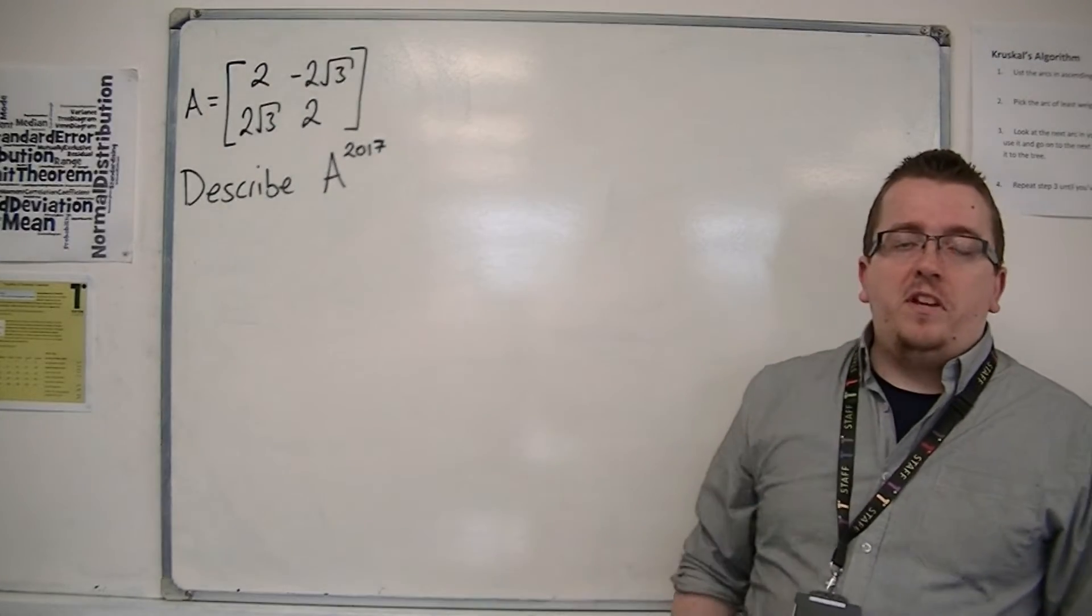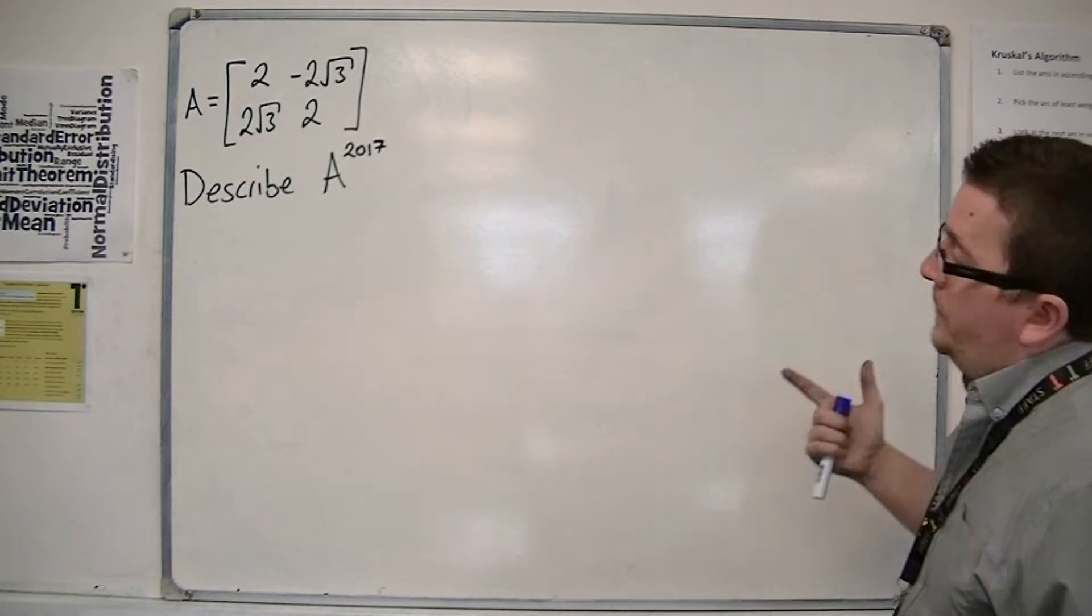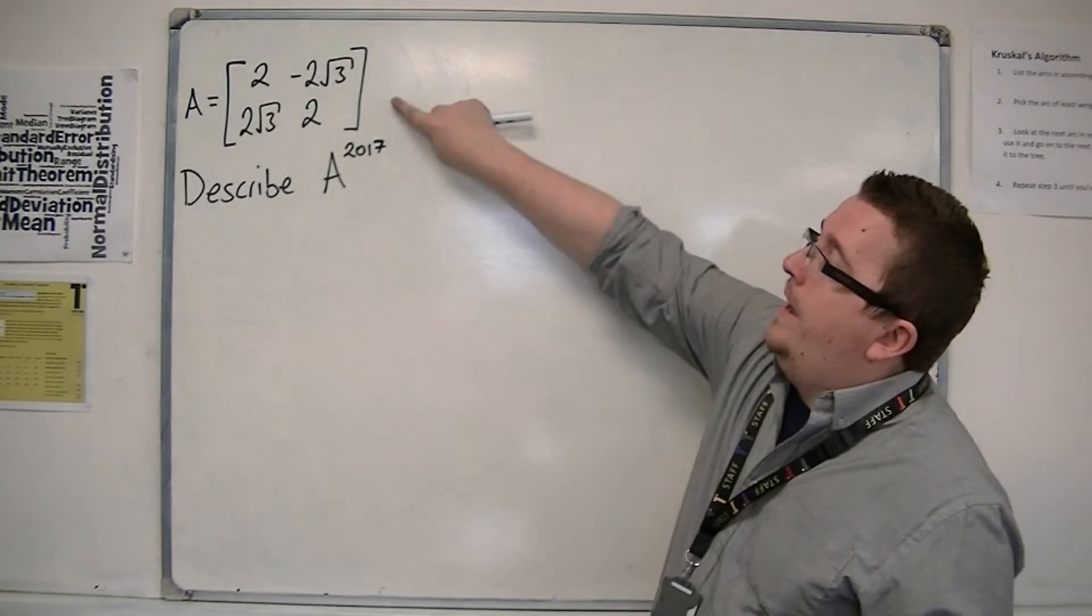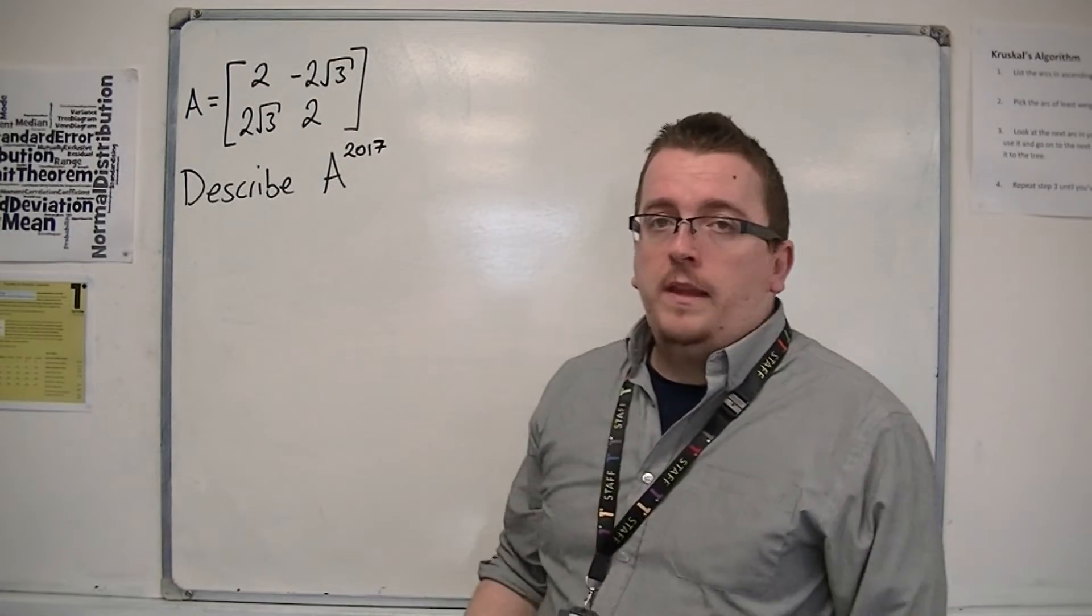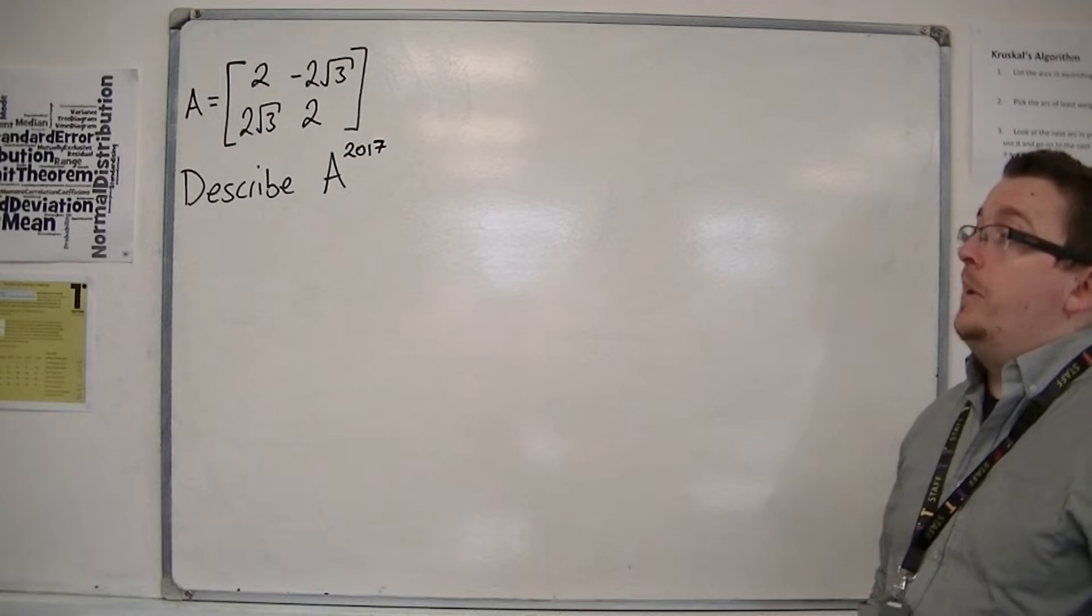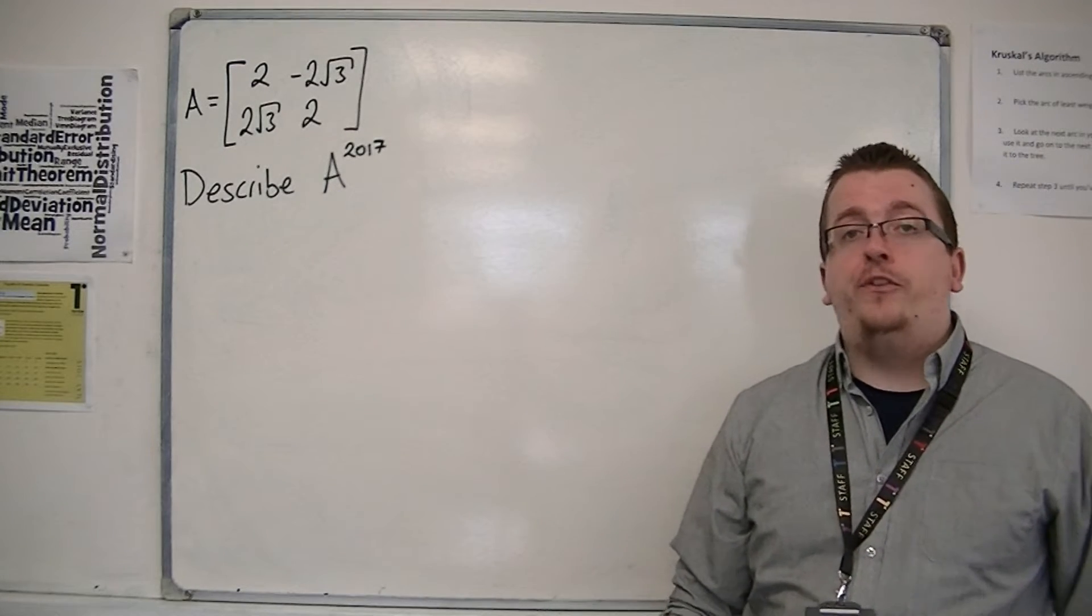In this video, this is going to be another composite transformations video of a matrix. So this is the matrix I'm looking at, A: 2, 2 root 3, minus 2 root 3, 2. And what I ultimately want to be able to do is to describe A to the power of 2017.